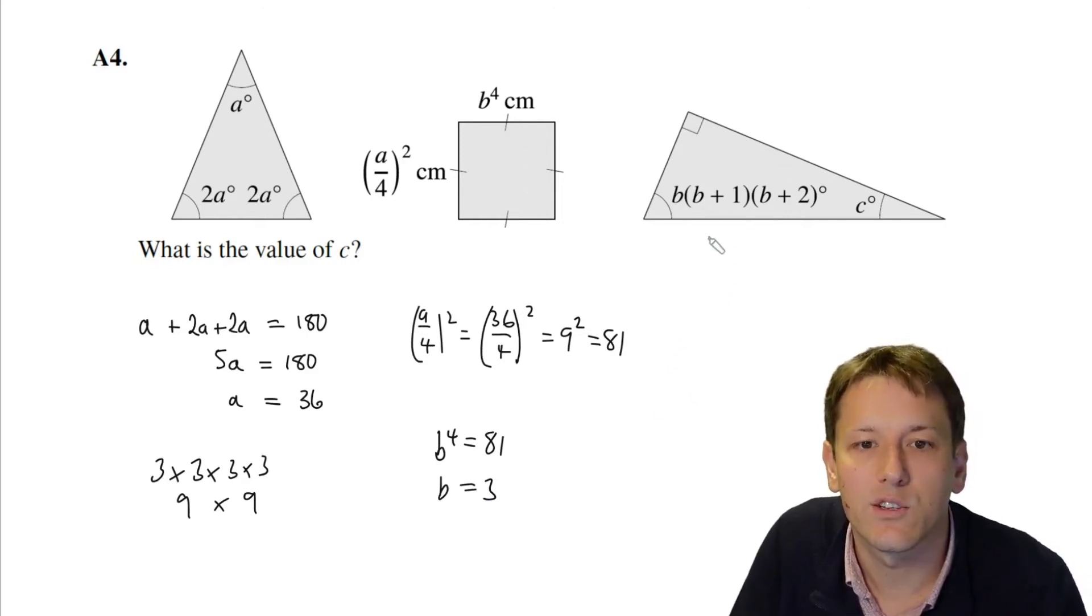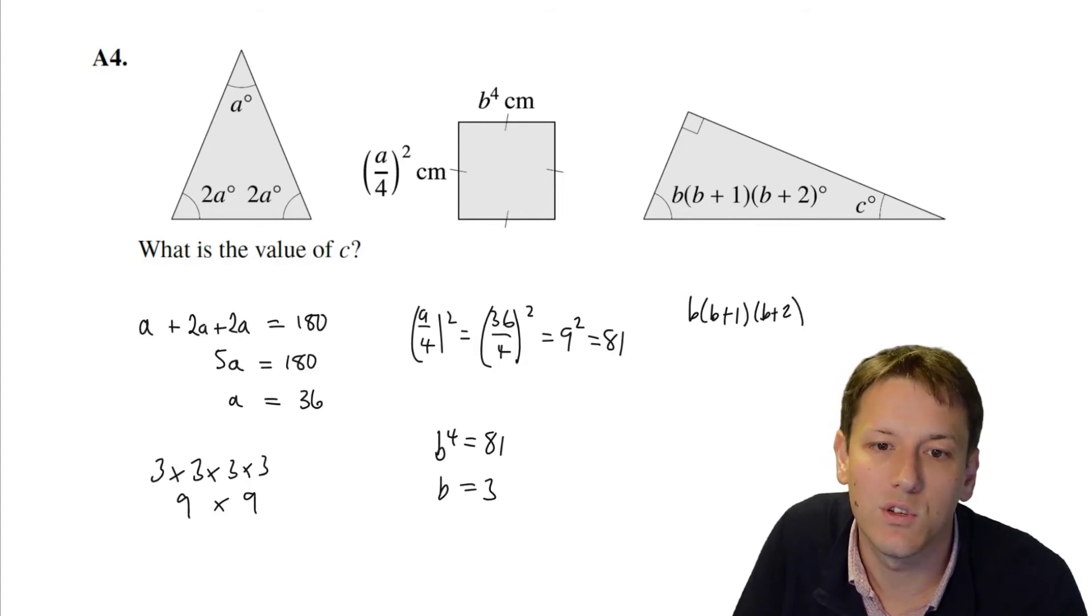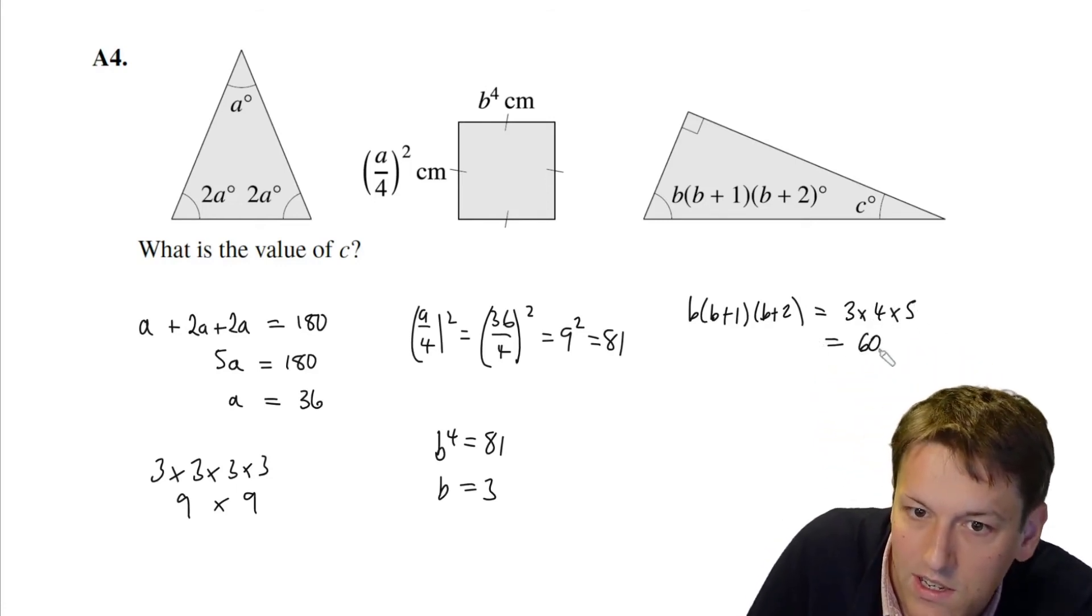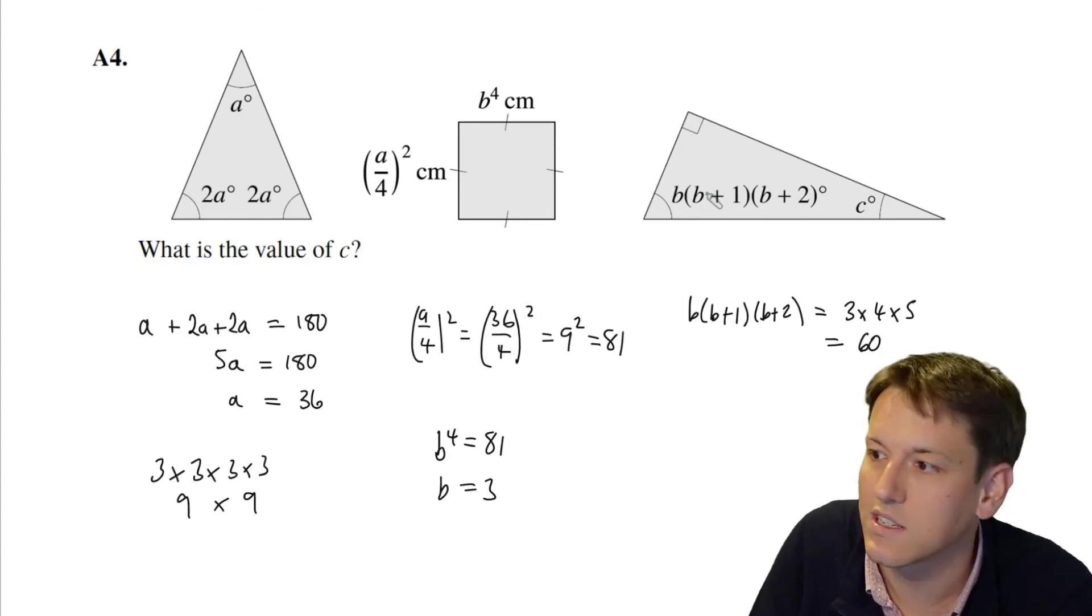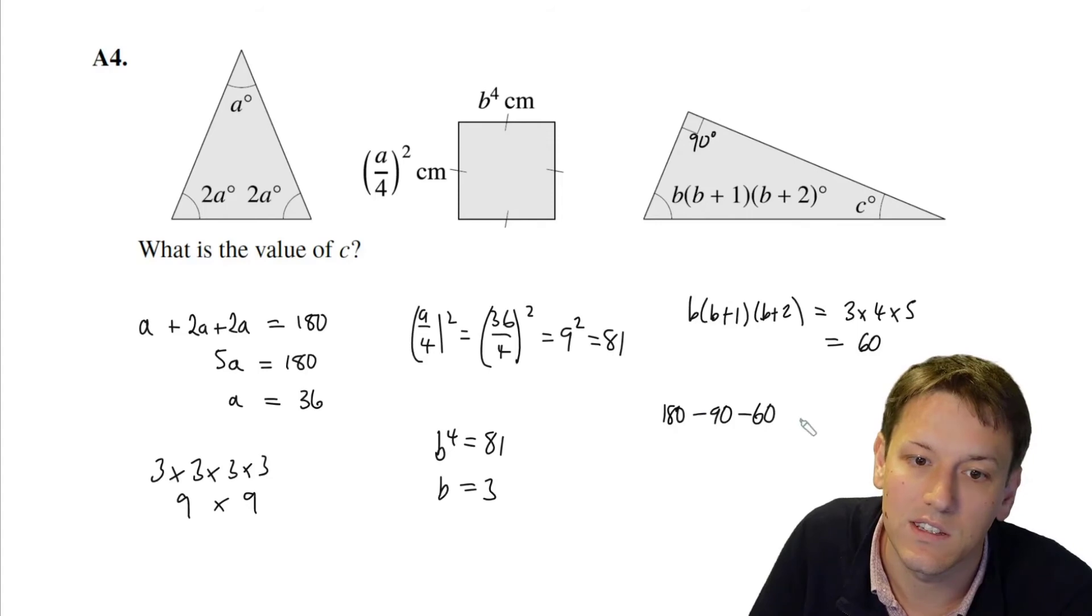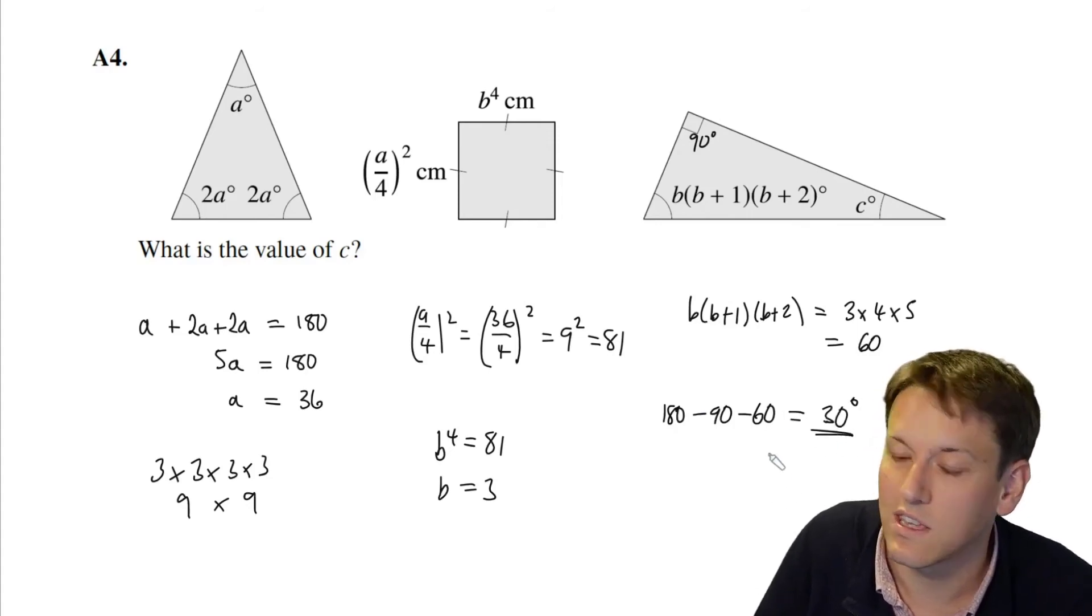And then if we look at the final triangle here, we've got b times (b plus 1) times (b plus 2). Well, we know b is 3 now, so this is just 3 times 4 times 5—that's 12 times 5, which is 60. So this one is 60 degrees, and we've got a right angle here of 90 degrees. So the final angle is 30 degrees, because the angles in a triangle add up to 180. So 180 minus 90 minus 60 is 30 degrees, and so the answer here is 30.